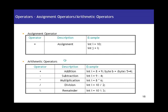I have put all the operator sets in a table where the first column is the operator, the second column is the description, and the third column is a simple example. The first operator is the assignment operator, which is the equals sign. For example, int i equals 10 — that is how you assign a value to an integer.